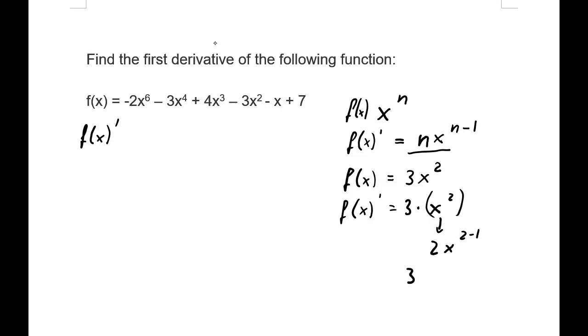So we would have 3 times 2x to the power of 1, which gives us 3 times 2x. We can simplify that to 6x. Just very simple. So let's move on to our example here.